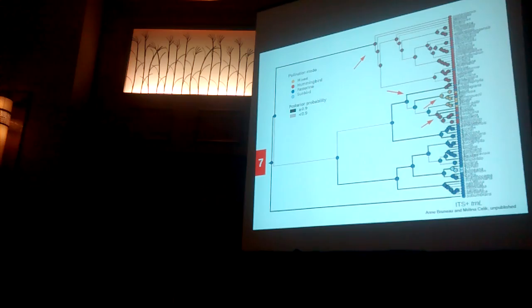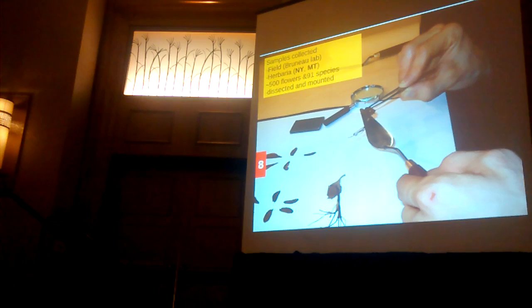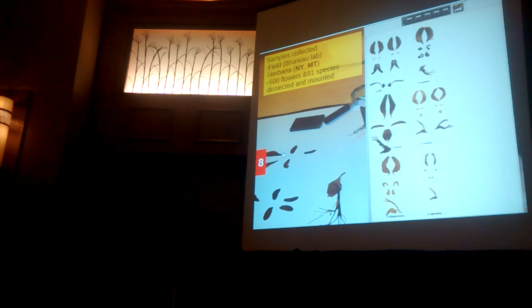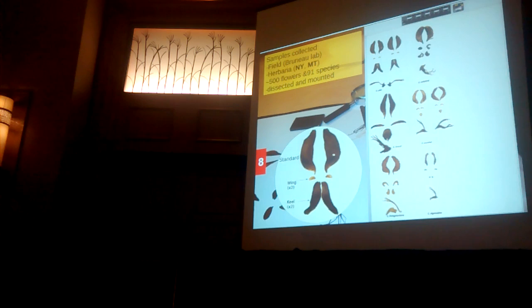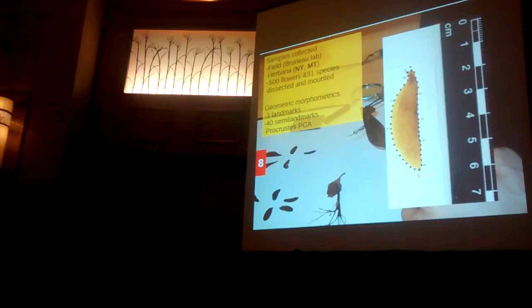To investigate how this relates to the appearance of different floral morphologies, we used samples of flowers obtained in the field or from different herbaria. We dissected and mounted these sample flowers, with a total of 500 flowers belonging to 91 species. Then to understand different shapes and compare them, we used a geometric morphometric approach, which allows us to record and compare shapes in quite an objective way.